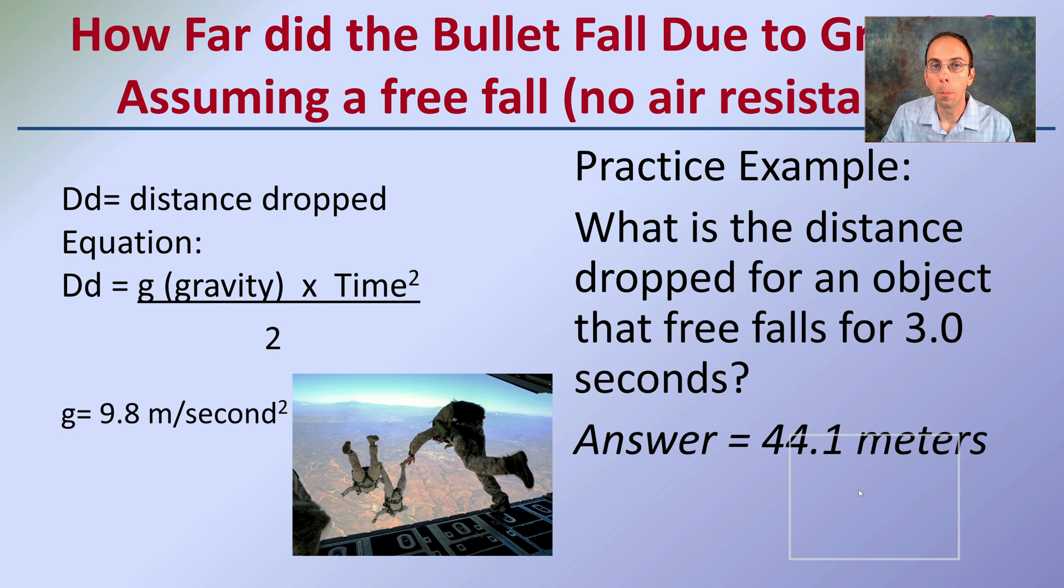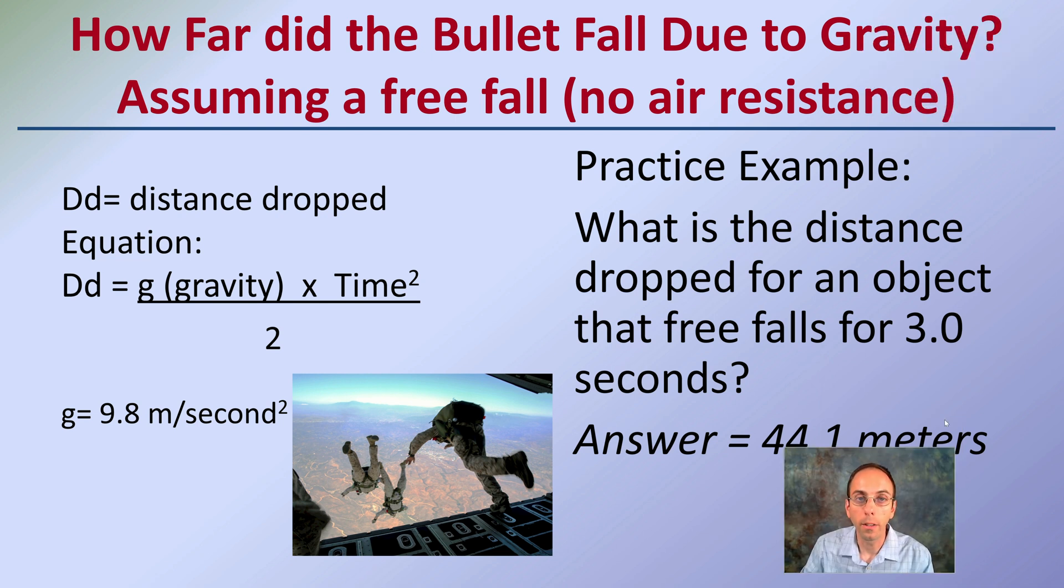How far did the bullet fall due to gravity? This is assuming a free-fall and no air resistance. Just as you can imagine, someone who jumps out of a plane is going very quickly, and when they open the parachute or increase their air resistance, their rate of fall decreases quite a bit.